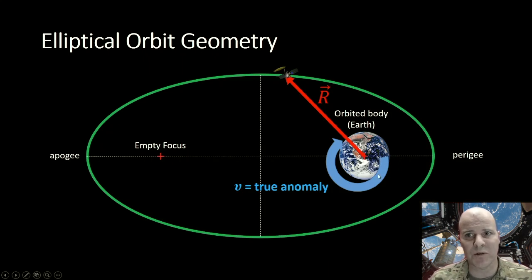We can also define our satellite's velocity vector as the quantity v, v vector. And that's going to be tangent to our orbital path.